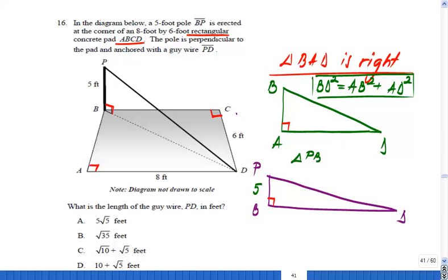In triangle PBD, which is also right, I'll write the Pythagorean theorem for PD. PD is your hypotenuse, so PD squared equals PB squared plus BD squared. The square of your hypotenuse equals the sum of the squares of the triangle's legs.